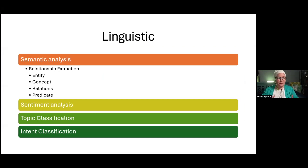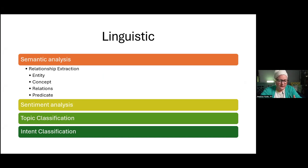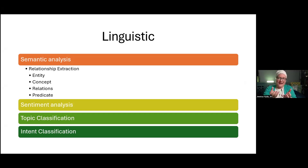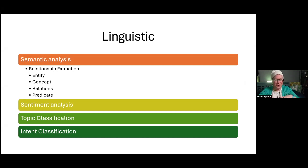Let's start with linguistic content. There are a couple of different types of linguistic analysis. The first is semantic analysis — drawing meaning from text. This could be relationship extraction, such as identifying what an entity is, like a company or organization, based on parts of speech. It could identify concepts or ideas, or relationships between people — really getting that meaning from content. Think of it like marking parts of speech in high school English class, only machines doing it with content they've never seen.